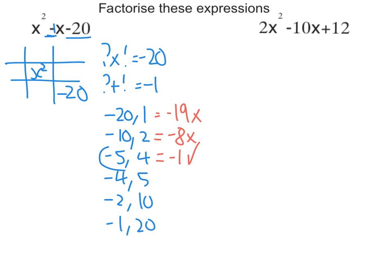So with this negative 5 and 4, I put an x with them and I put them into my grid—so negative 5x and plus 4x. Now I factorize my rows and columns. So x squared and 4x, the common factor is x.